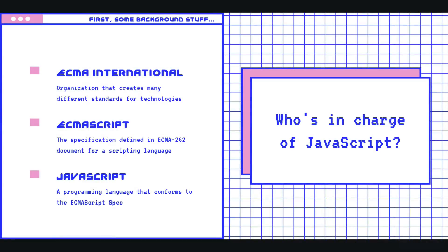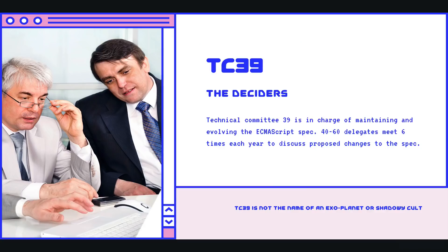In order for a new feature to be added in, it must first be added to the spec — to this Bible that describes how the language should work. Then individual browsers go and update and include those features. ECMA is a large organization; they have lots of different specs and lots of different groups, and these things called technical committees, one of which is called TC39. It sounds like a shadowy government group or maybe a planet in a sci-fi novel. And this technical committee is in charge of maintaining and evolving ECMAScript, that specification.